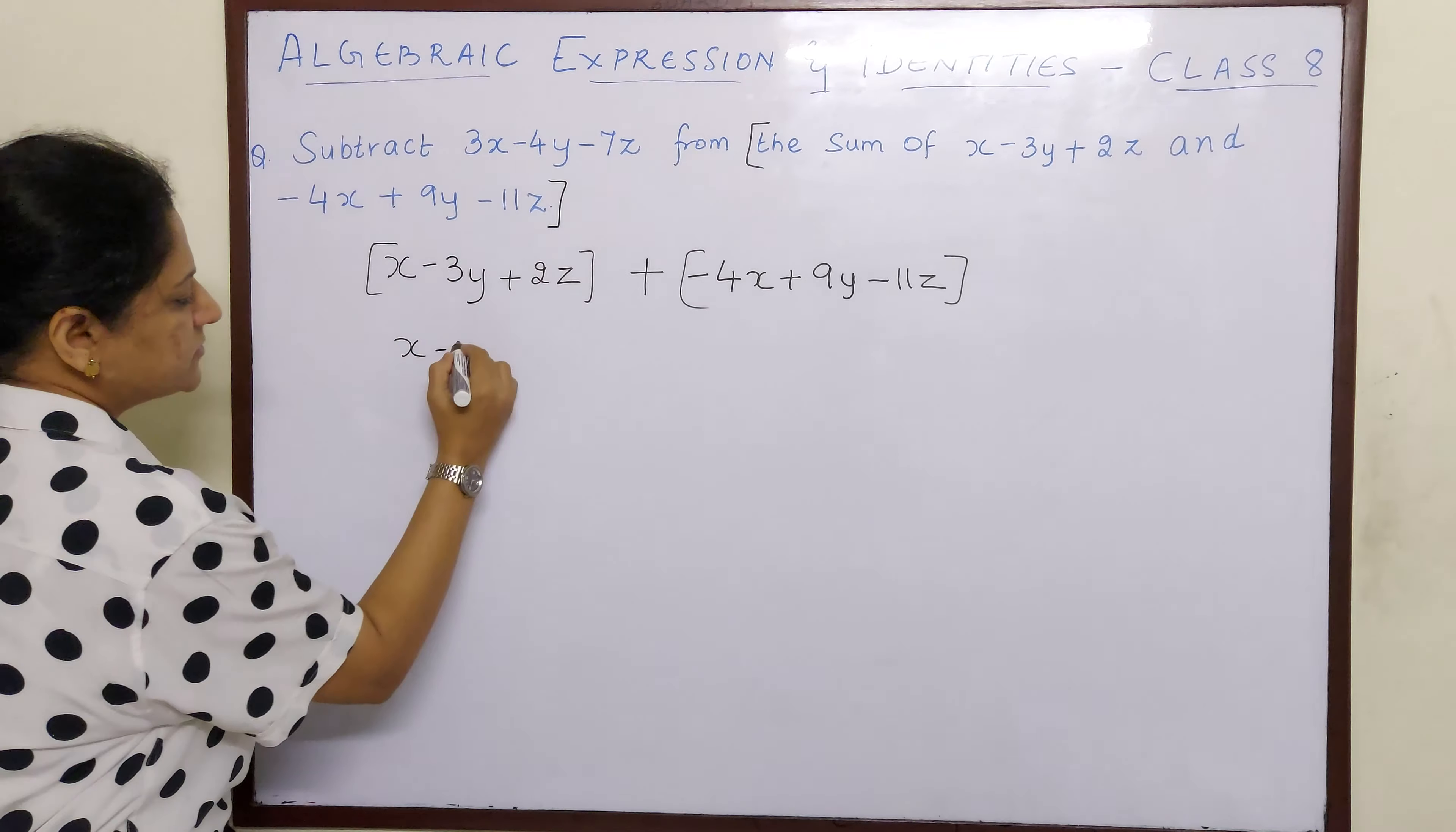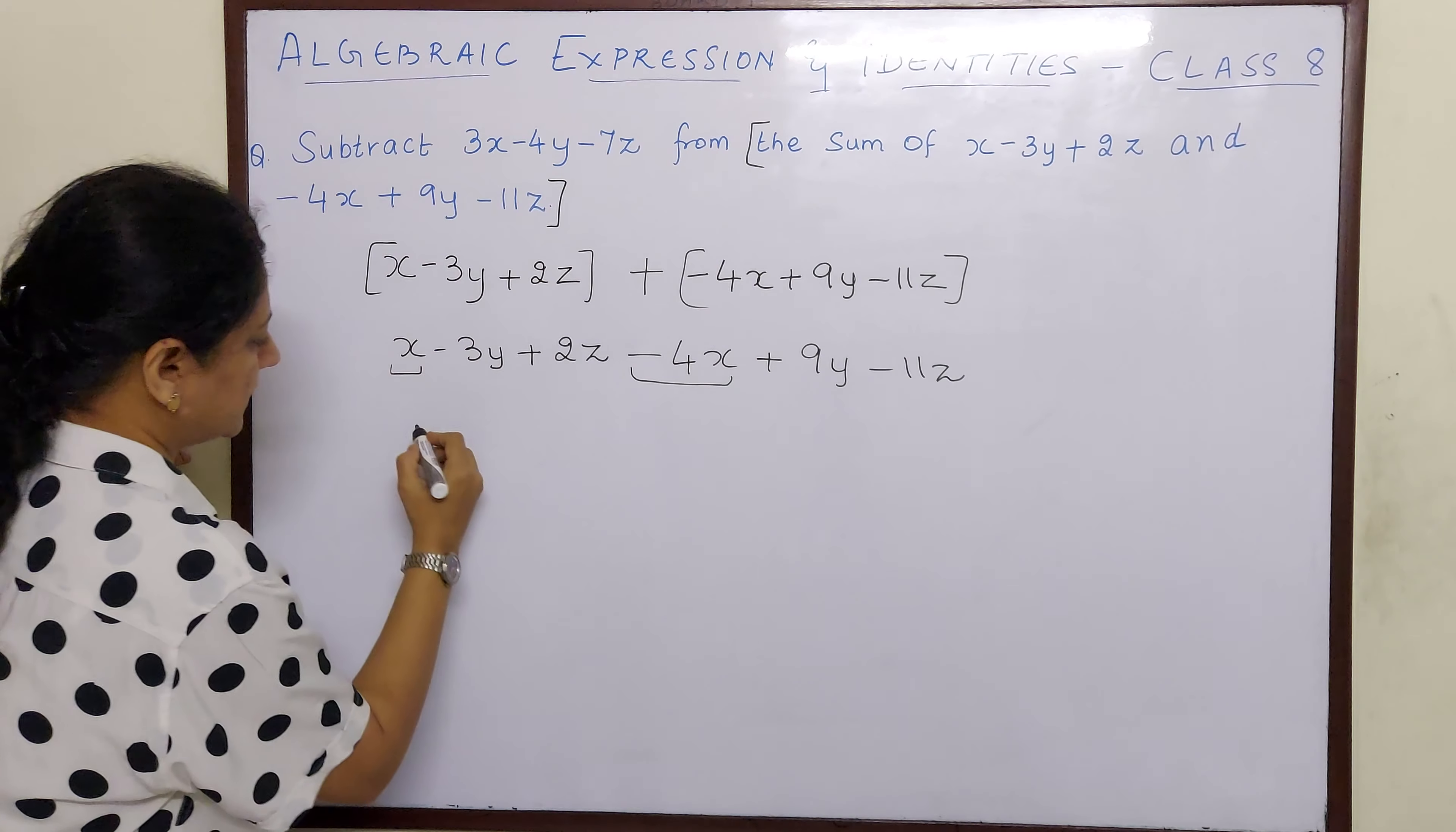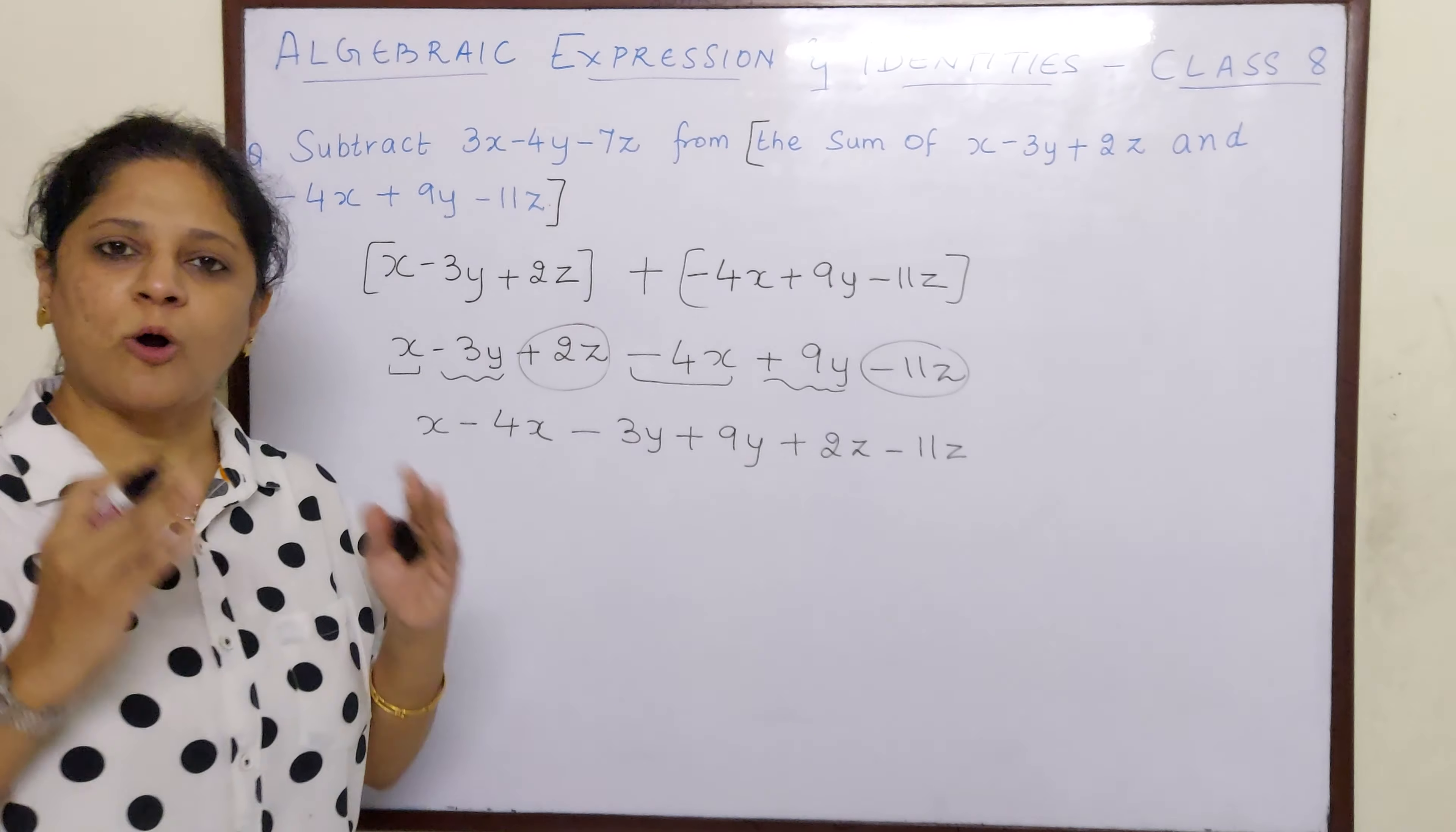The first one does not yet change, so the algebraic expression remains the same. Outside the bracket it is plus sign, so the signs inside the bracket won't change: minus 4x plus 9y minus 11z. Now we have to bring all the like terms together. So x and minus 4x: x minus 4x. Then minus 3y and plus 9y: minus 3y plus 9y. And then plus 2z minus 11z. Now we have brought all the like terms together.